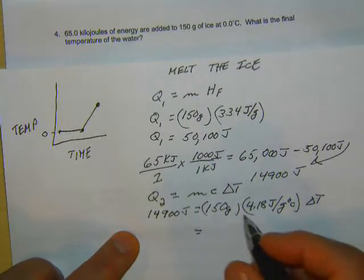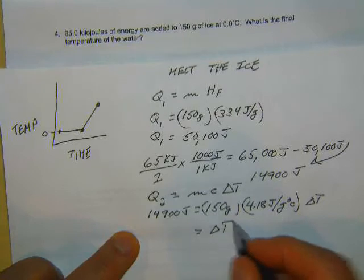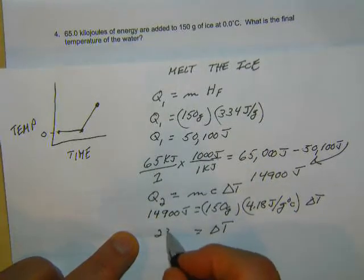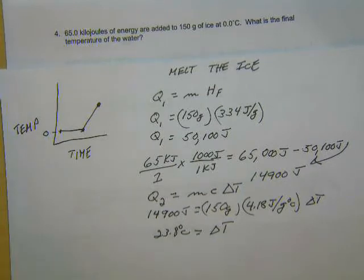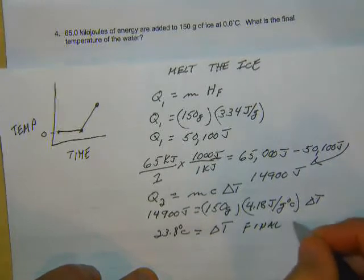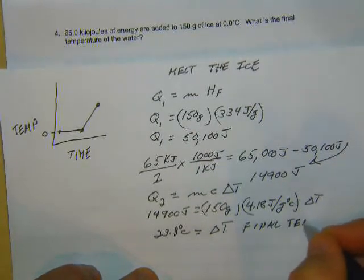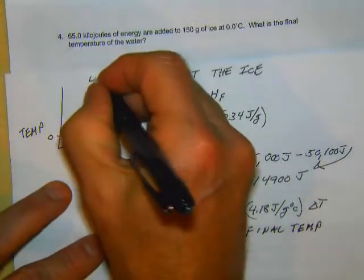Well, if we go and do the math, we'll find that delta T equals 23.8 degrees Celsius. Well, seeing we started at zero, that's also going to be our final temperature. So that's how we do problem number four.